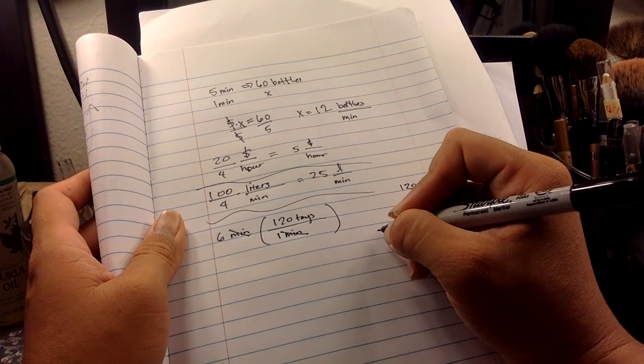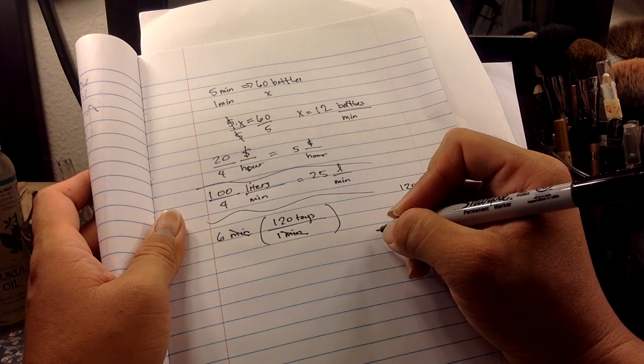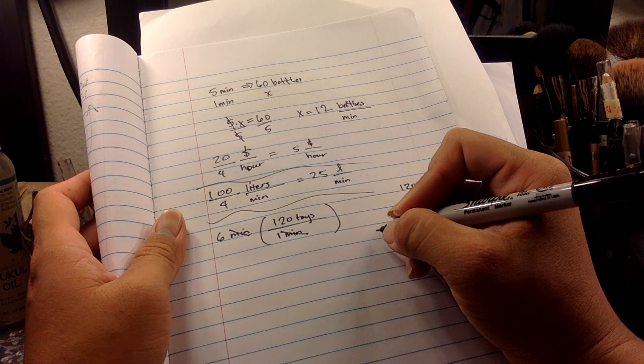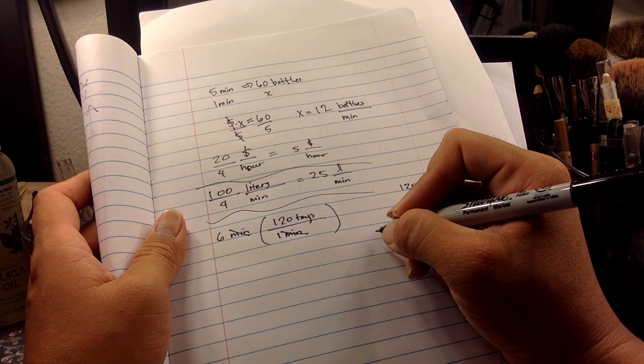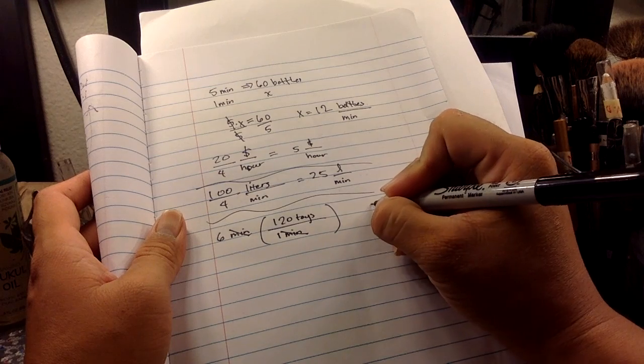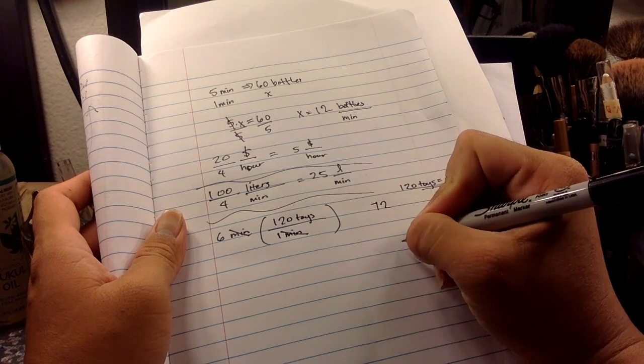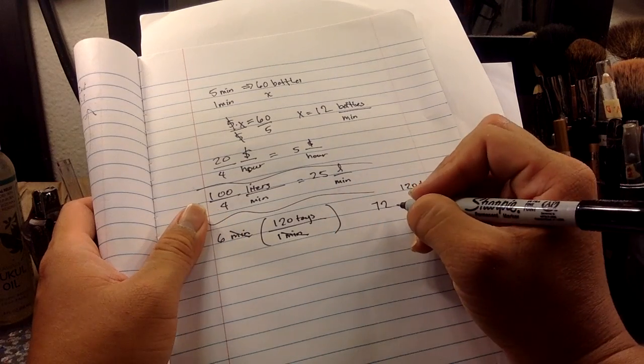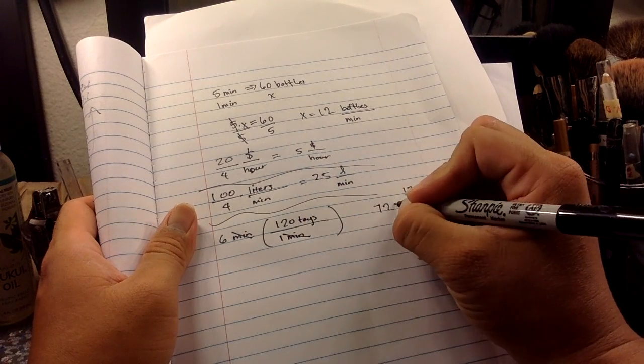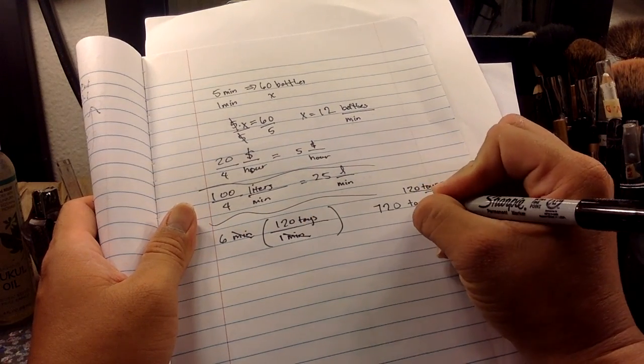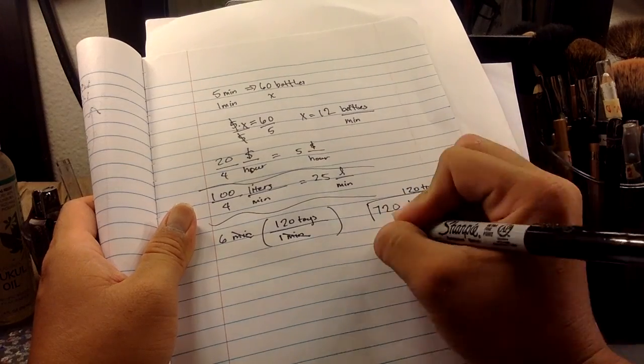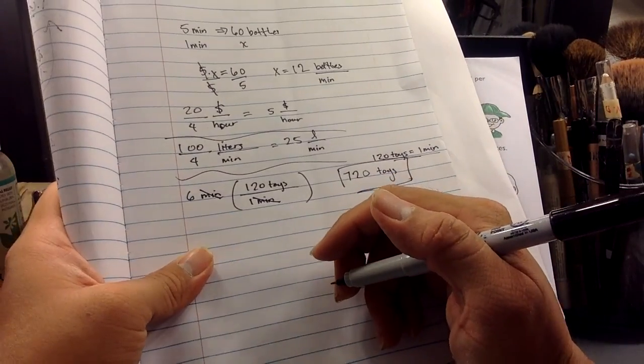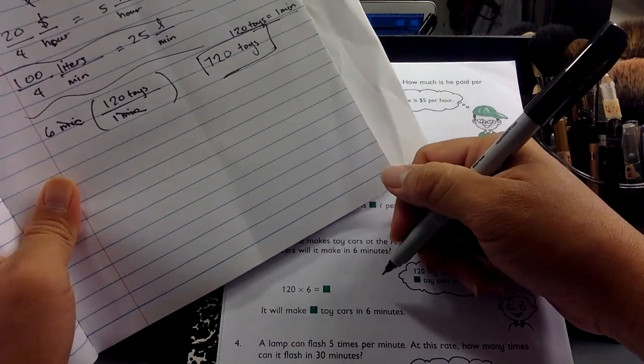That would be six times 12. I'm not very good at this. Let's see. Is that 72? Yeah. 72. Uh, well, no, it's 720. So apparently this machine can pop out 720 toys for every six minutes.